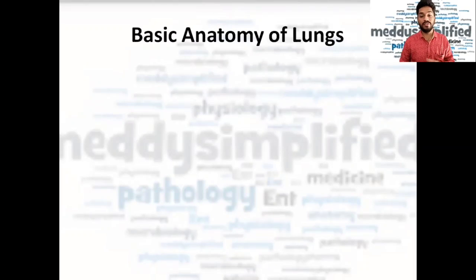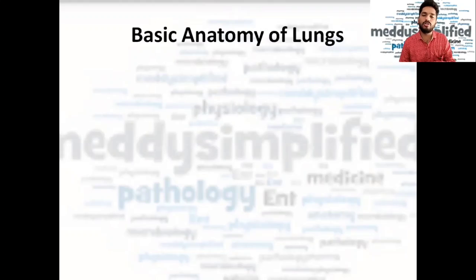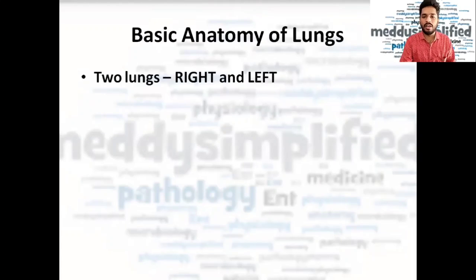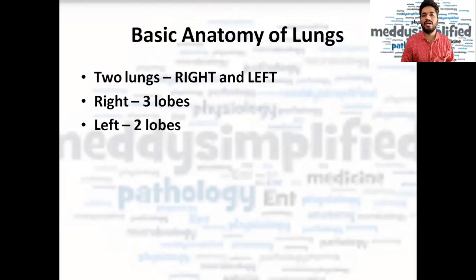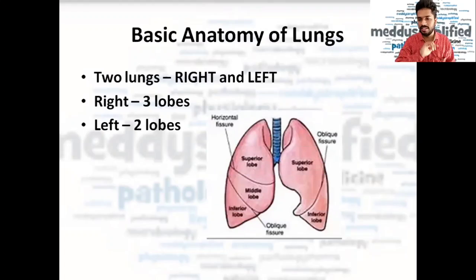Now, a basic anatomy of the lungs which we should know for understanding CT severity score. For medicos this is straightforward, but this is also for the common people who watch our videos. We have two lungs — right and left. The right lung has three lobes: upper lobe, middle lobe, and lower lobe, whereas the left lung has two lobes: upper and lower. This is the image of the lungs and lobes.